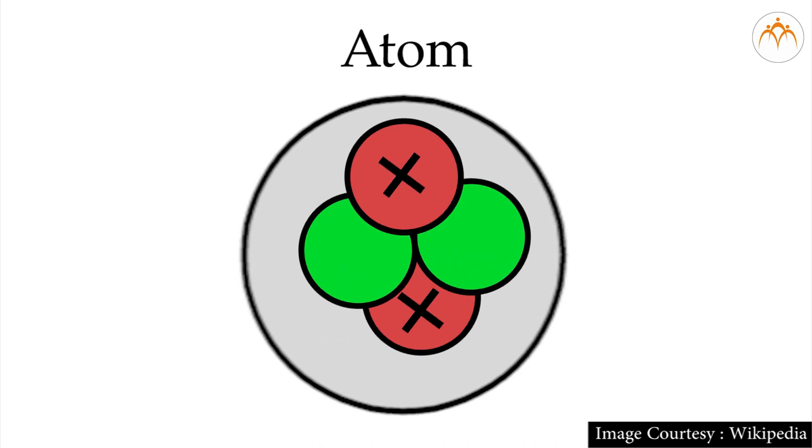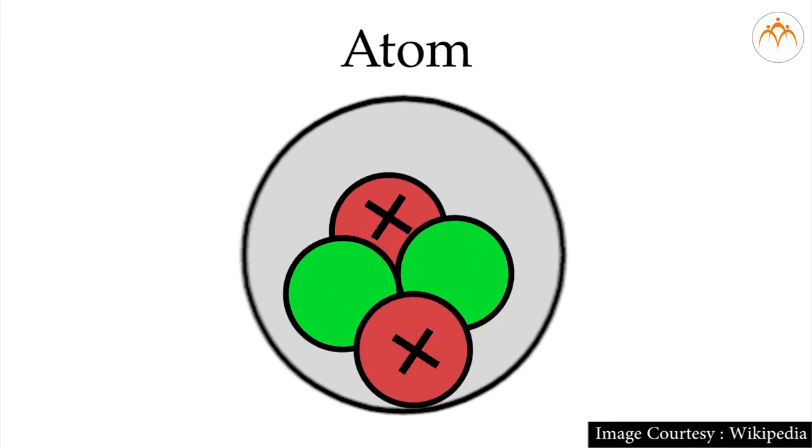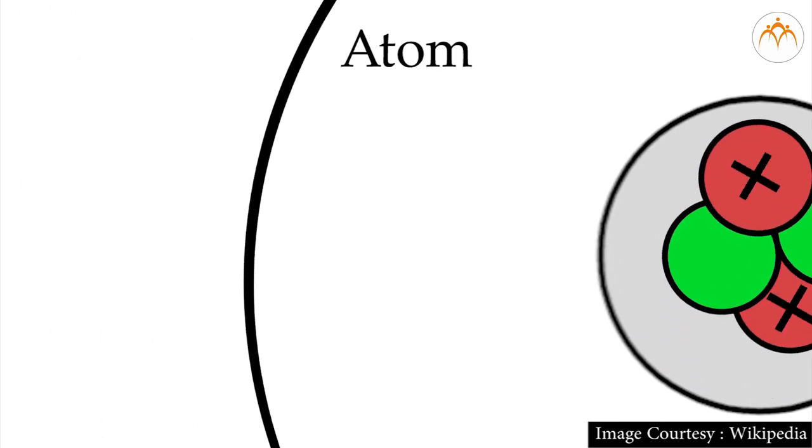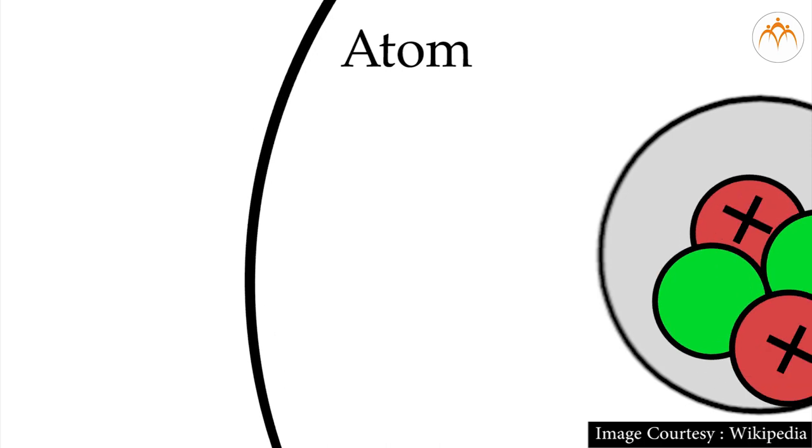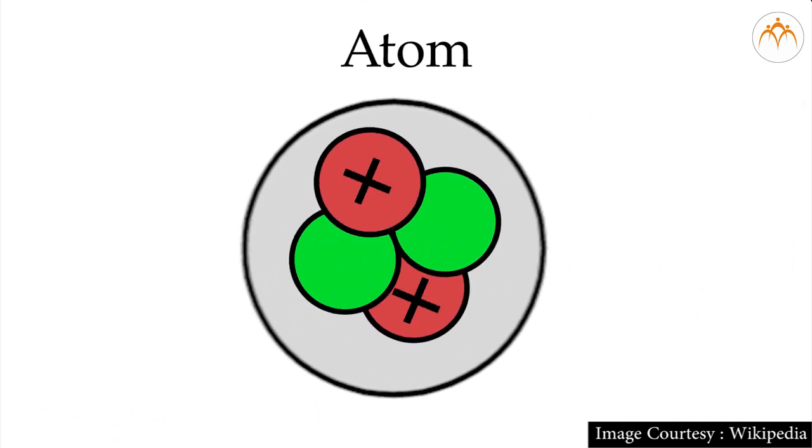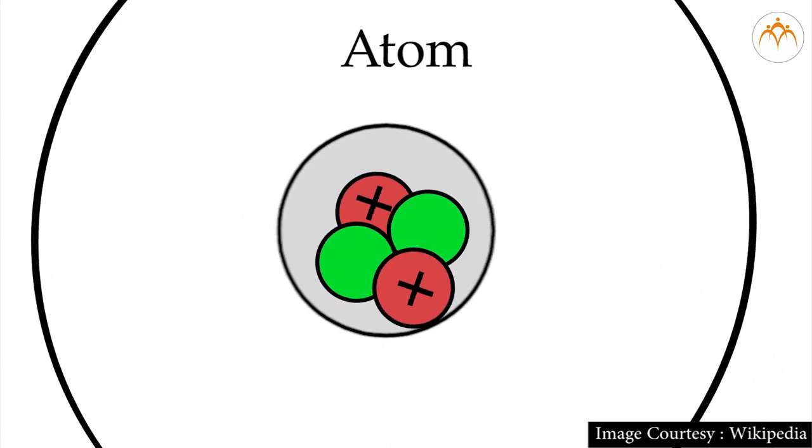We will revise the structure of an atom. In an atom, the nucleus is situated in the center, and electrons are revolving around the nucleus in fixed orbits. Protons and neutrons are present in the nucleus.